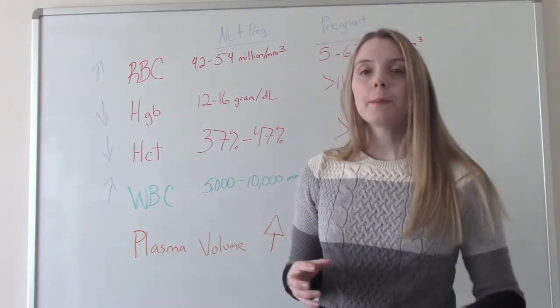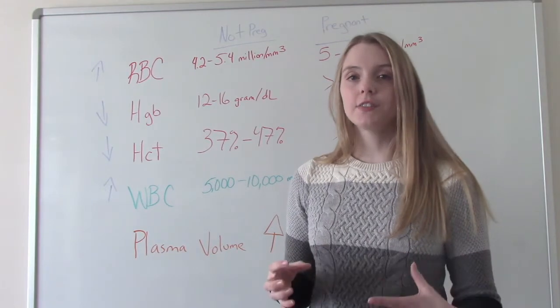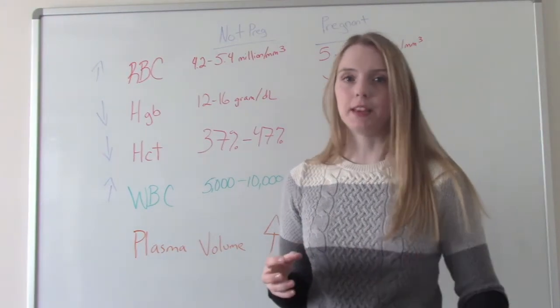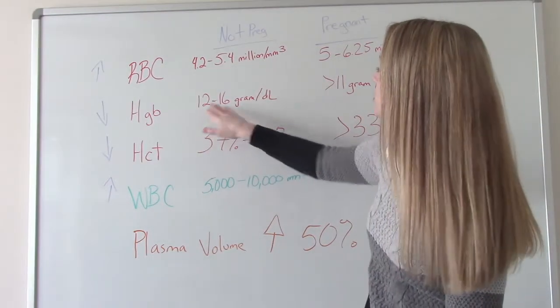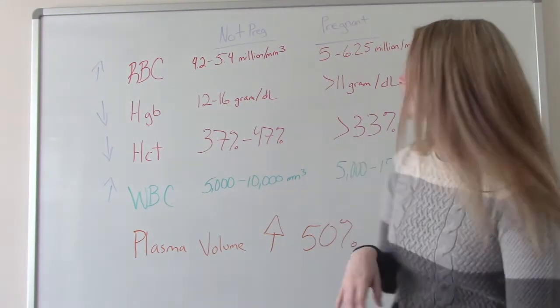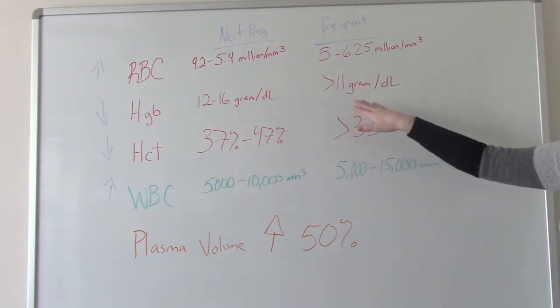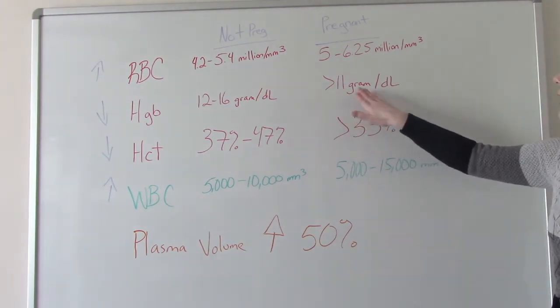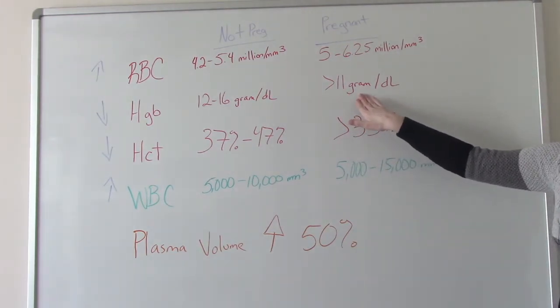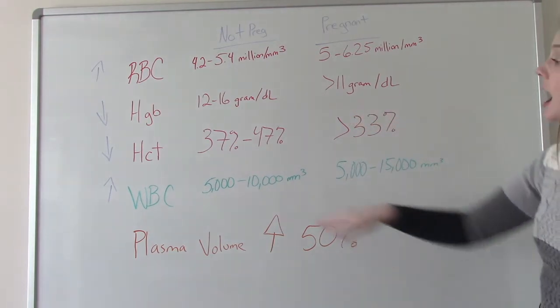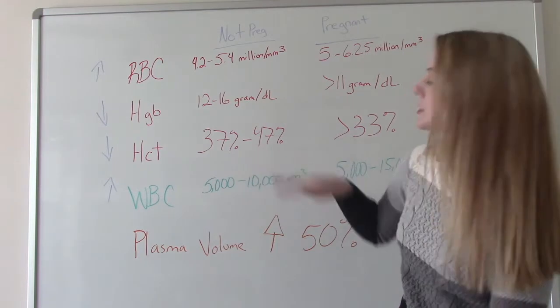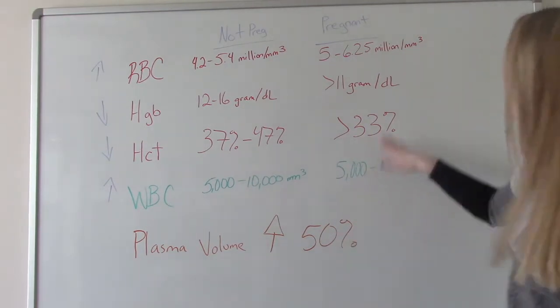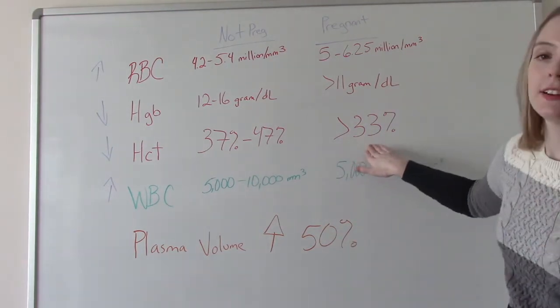This is really important because pregnant women are often screened for anemia. So when you're not pregnant, your hemoglobin is going to be 12 to 16 grams per deciliter. And then when you become pregnant, it's going to lower. So anything above 11 grams per deciliter. And your hematocrit, same thing. When you're not pregnant, 37% to 47%. And then when you become pregnant, we're happy if we're above 33.